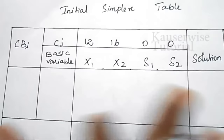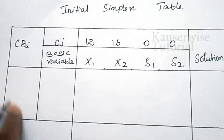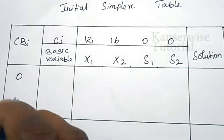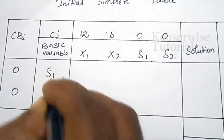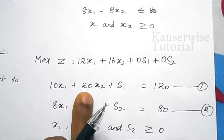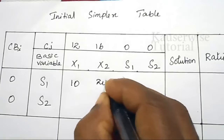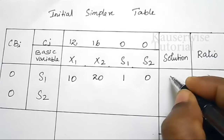In this objective function, we have introduced two slack variables s1 and s2 as the initial basic variables. Their cost values (cbi) are both 0. For the first constraint, 10x1 plus 20x2 plus 1·s1 plus 0·s2 equals 120. Only one slack variable s1 is introduced in the first constraint, so s2 has coefficient 0. The solution is 120.